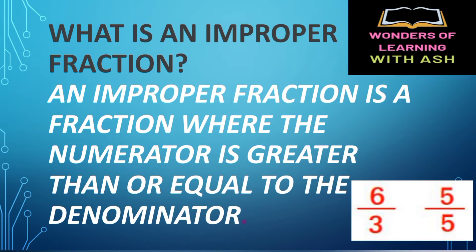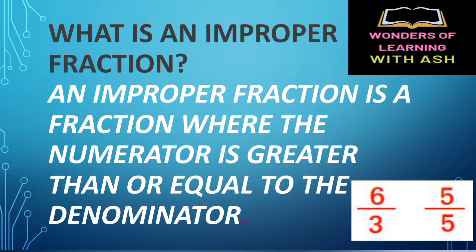An improper fraction is a fraction where the numerator is greater than or equal to the denominator. For example, 6 by 3 — here the denominator and numerator can be the same number. This fraction is an improper fraction.